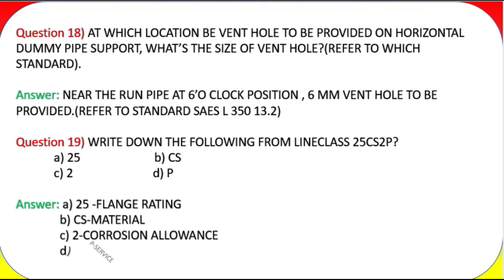Question 19: Write down the following from line class 25CS2P: (a) 25, (b) CS, (c) 2, (d) P. Answer: (a) 25 = flange rating, (b) CS = material (carbon steel), (c) 2 = corrosion allowance, (d) P = service.